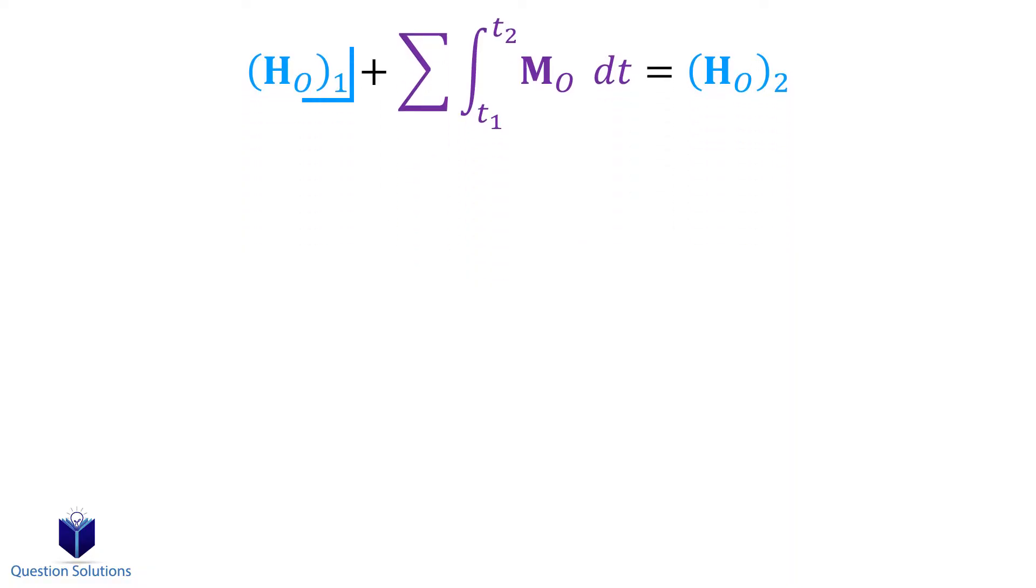Angular momentum is the moment of a particle's momentum about a point. Sounds confusing, but let's say we have a particle like this, and it's moving along a curved path, and it's along the xy plane. We can easily find the momentum by multiplying mass times velocity.